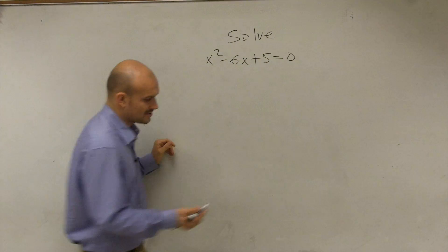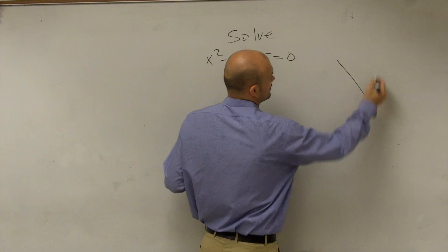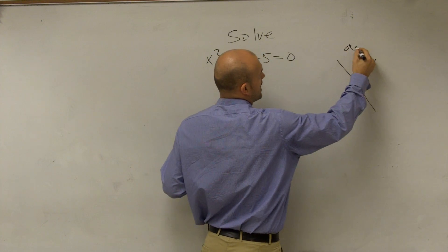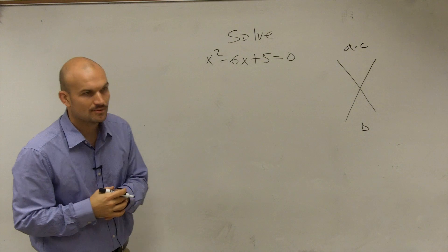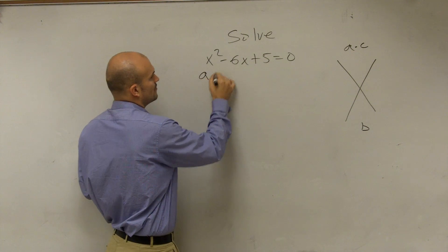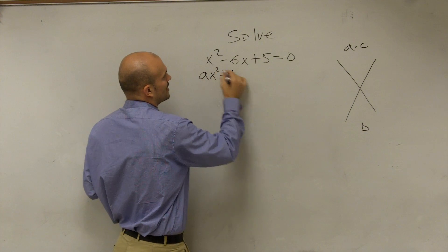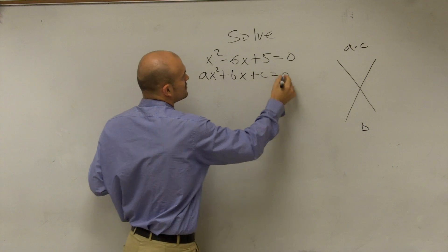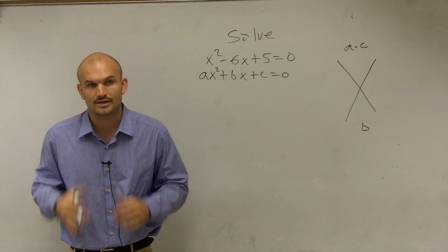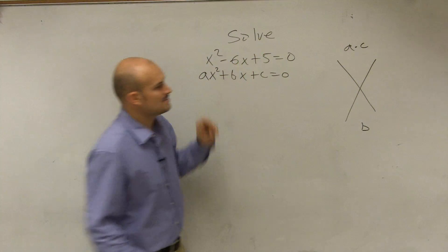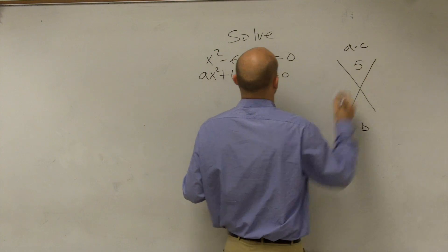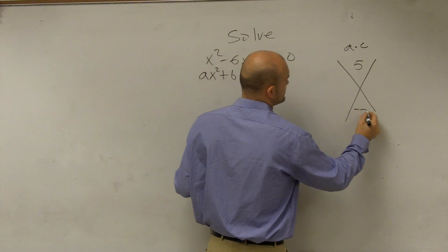So since there's no number that we can factor, I'm going to use a little technique, which I called the diamond kind of method, where I take a times c and I multiply them. So remember, ax squared plus bx plus c equals 0 is our standard form for our quadratic equation. So I look at my a times my c. So I have 1 times 5, then negative 6.